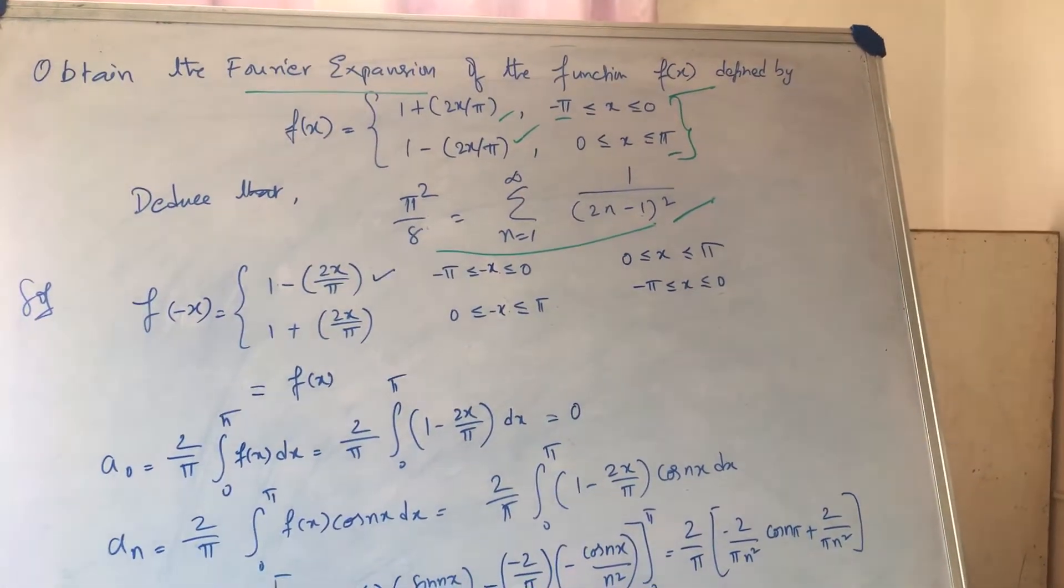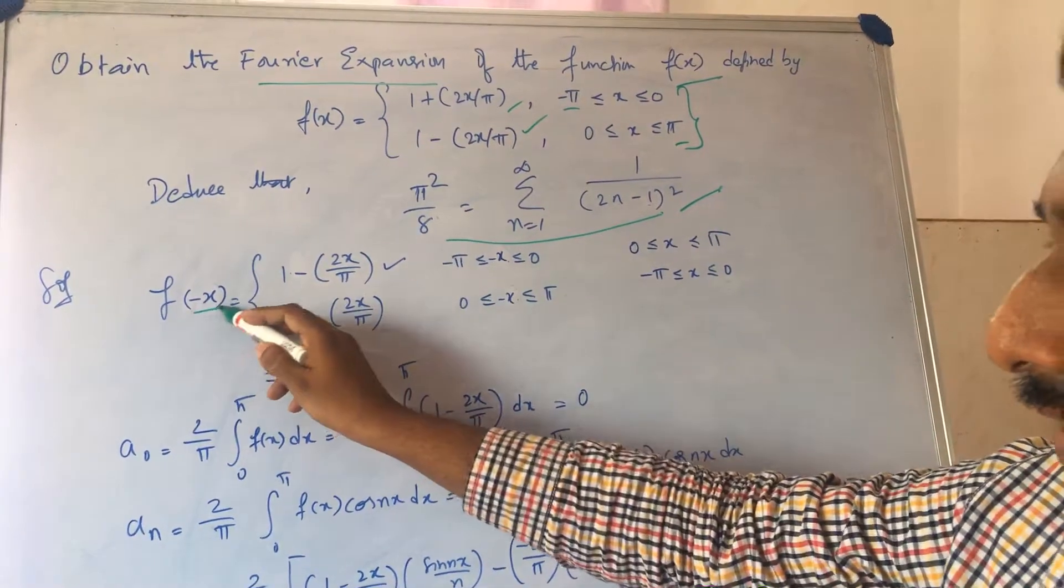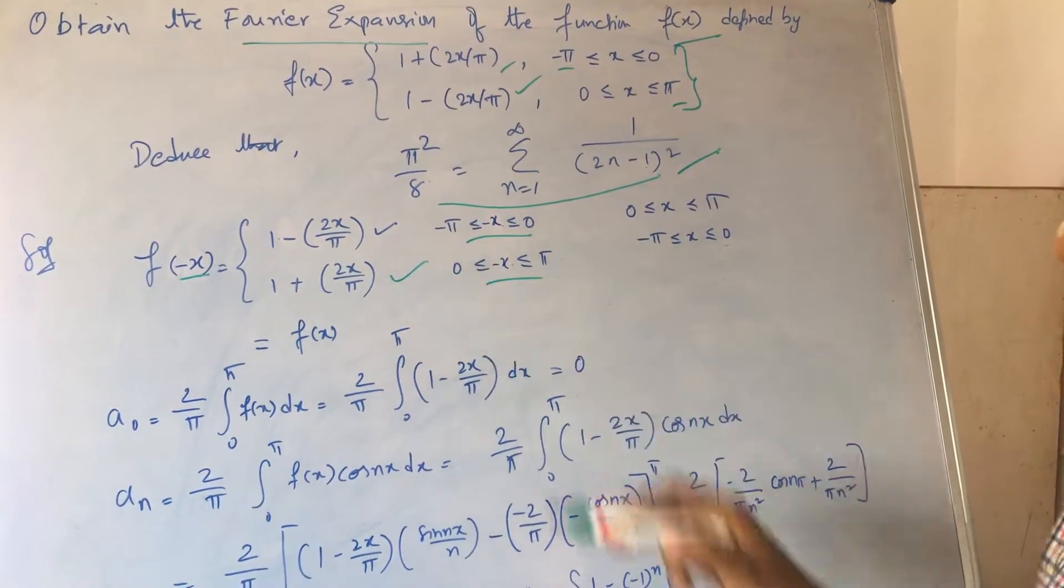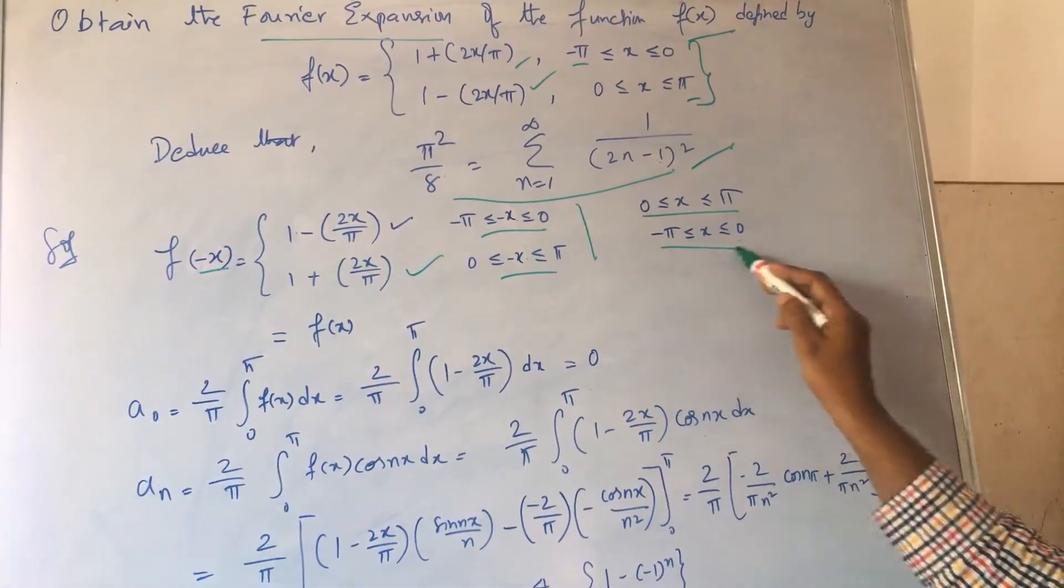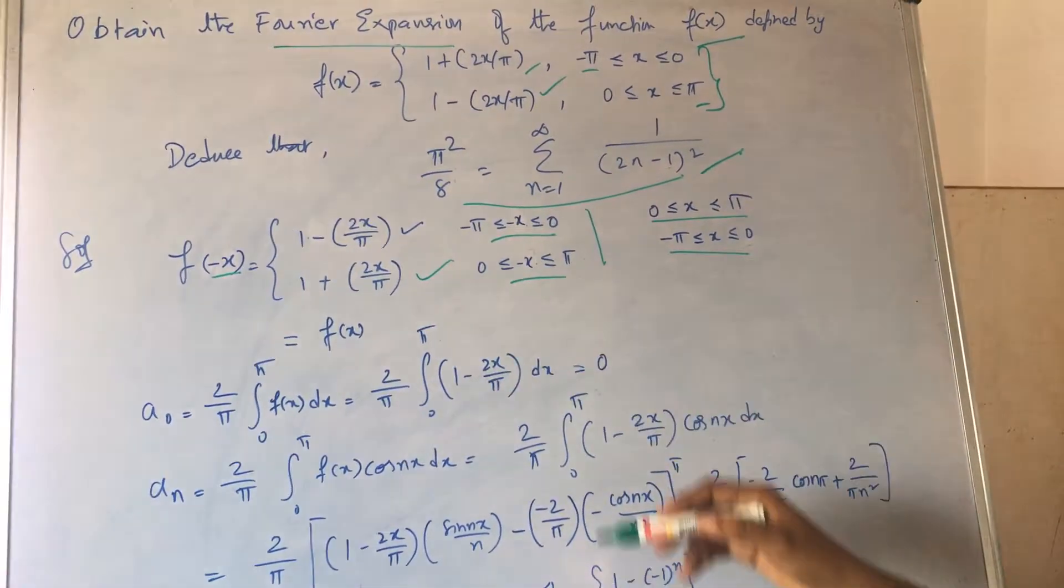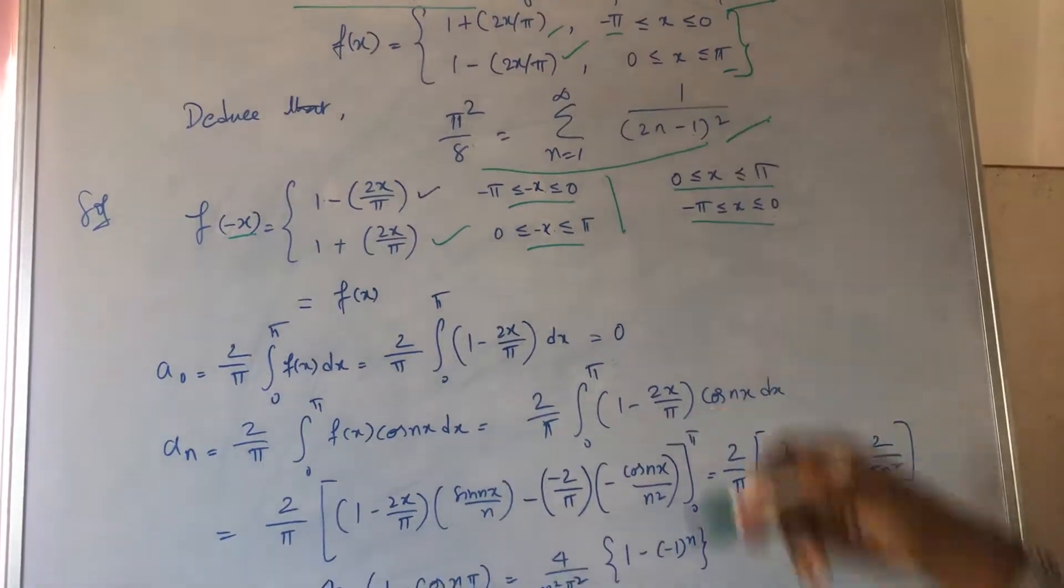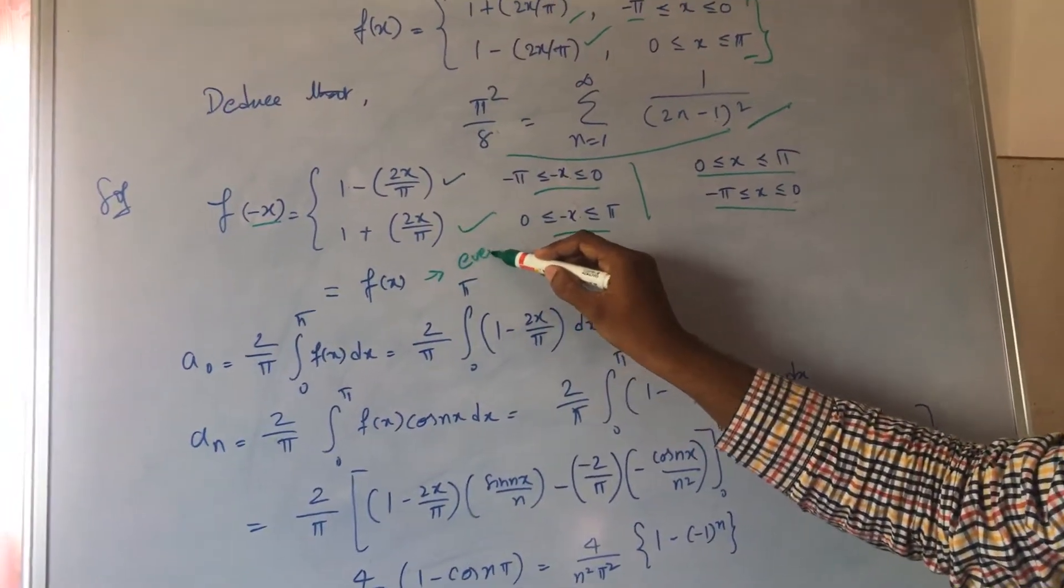First, let us find whether it is an even function or an odd function. When I substitute minus x throughout, and then afterwards if I change this limit, I get the same function back. When you notice this for the given function, it is the same as that, so I conclude this as an even function.